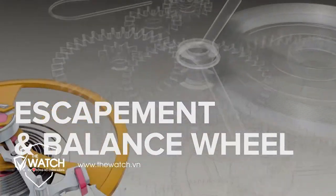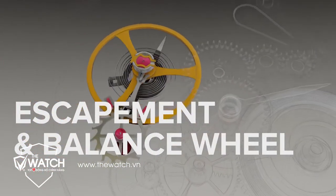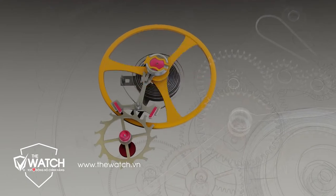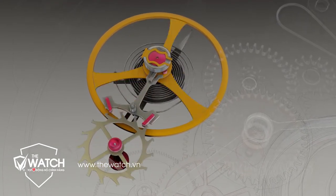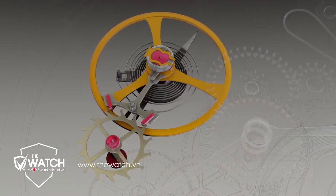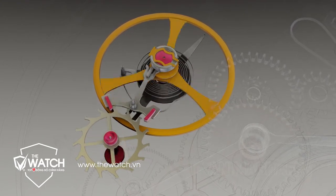The escapement and balance wheel. The balance wheel swings in a precise rhythm, knocking the pallet fork back and forth, allowing the escape wheel to move, which releases mainspring power in small metered increments.